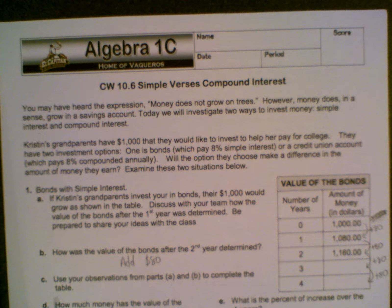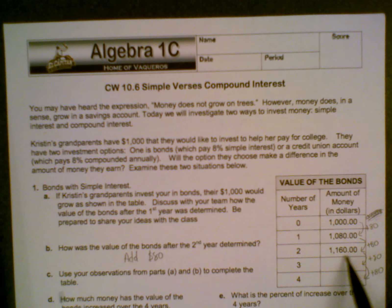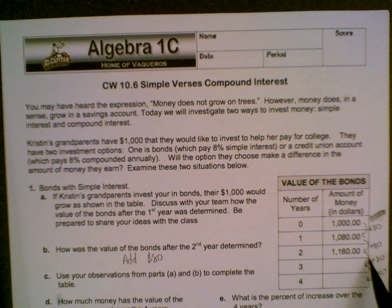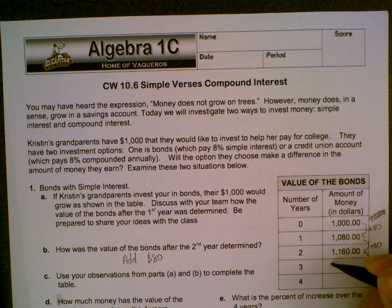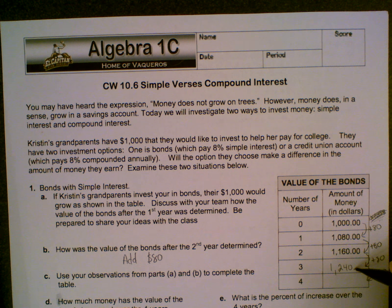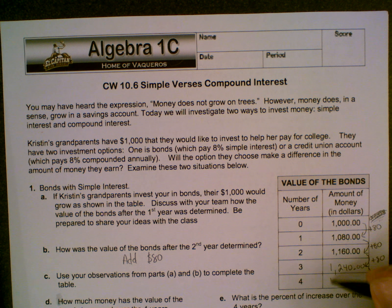Kristen's grandparents have $1,000 that they would like to invest to help her pay for college. They have two investment options: bonds, which pays 8% simple interest, or a credit union account, which pays 8% compounded annually. Will the option they choose make a difference in the amount of money they earn? Examine these two situations below.